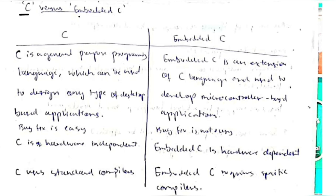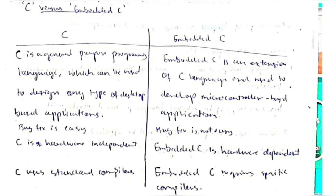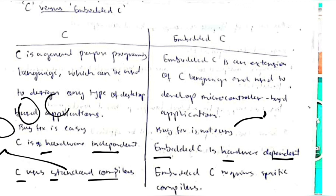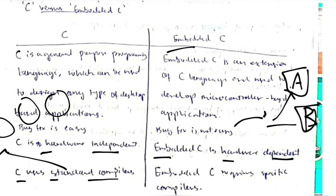Differentiating C and Embedded C: C is a general-purpose programming language, while embedded C is a specific language developed for specific tasks. Bug fixing is easy in C but not in embedded C. C is hardware independent, while embedded C is hardware dependent. C uses standard compilers, whereas embedded C uses specially designed compilers — a separate compiler for each specific task.